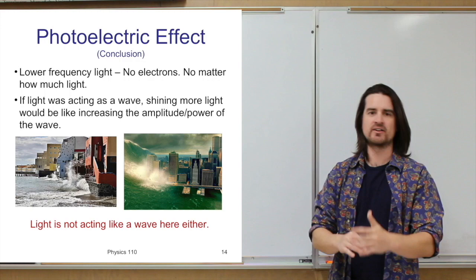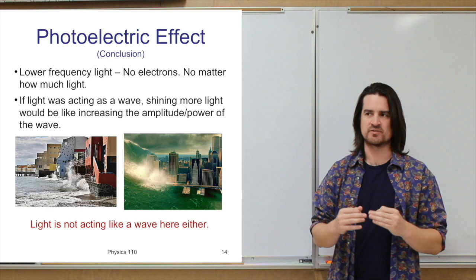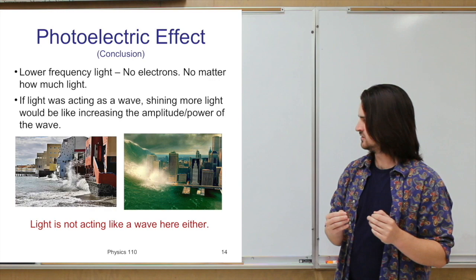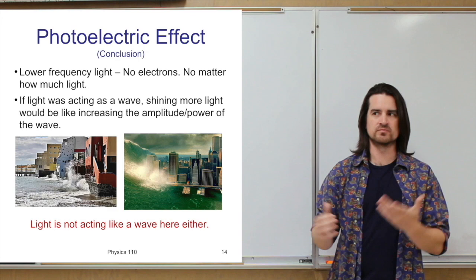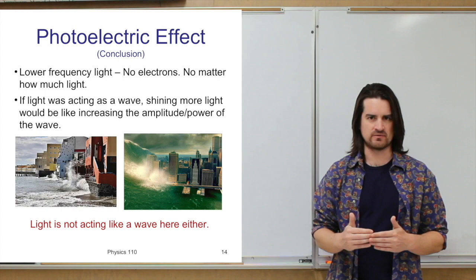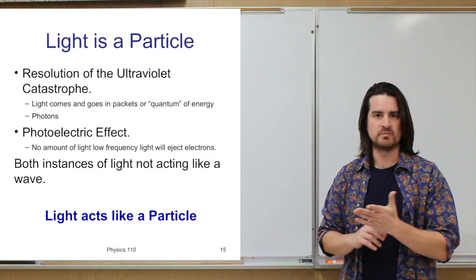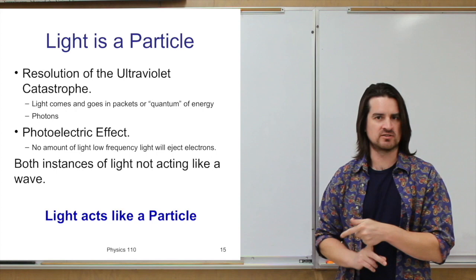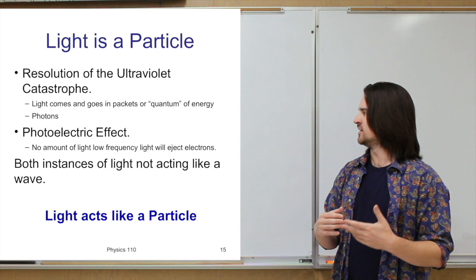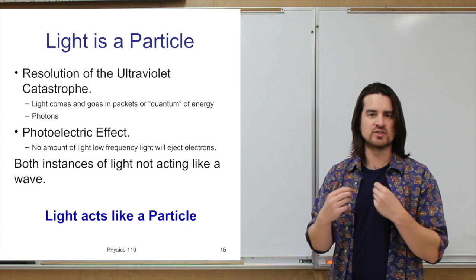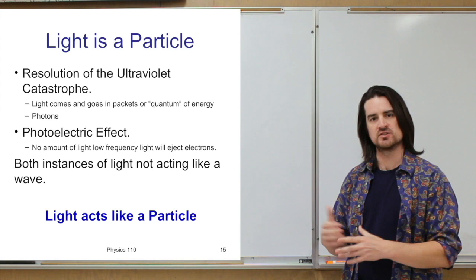This was essentially another observation — another phenomenon happening — that was saying light actually isn't acting like a wave there; it's acting more like a particle. From the resolution of the ultraviolet catastrophe, it turned out that light would make more sense and work out with observations if you said light actually came in packets — it was photons, chunks of light. And from the photoelectric effect, light was acting more like it came in chunks, not like a wave. Both of those examples and their resolutions were telling us that light doesn't actually act like a wave there — light acts like a particle there.